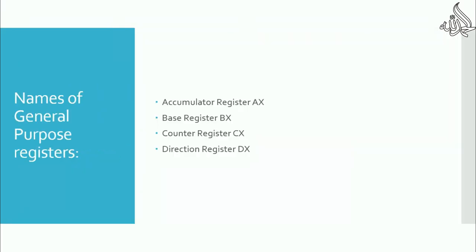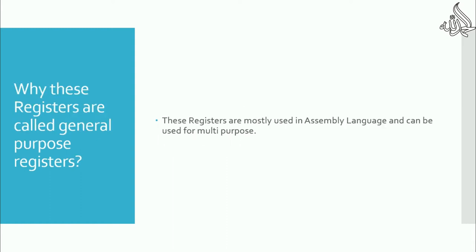The names of general purpose registers are: first, the accumulator register; second, the base register; third, the counter register; and fourth, the direction register. These four are the basic general purpose registers that can be used in assembly language.